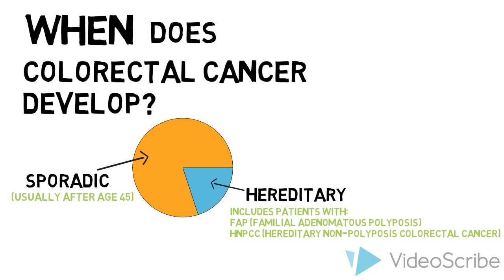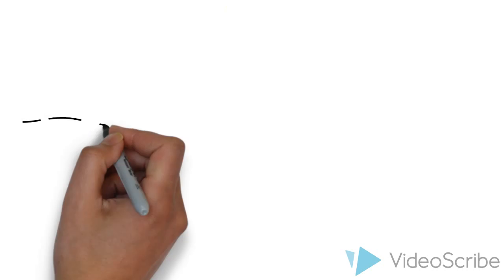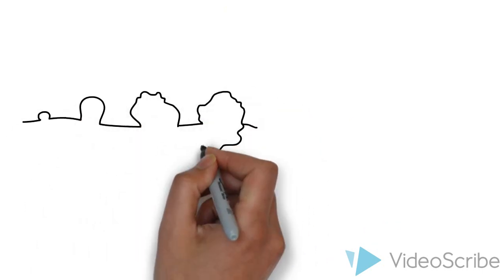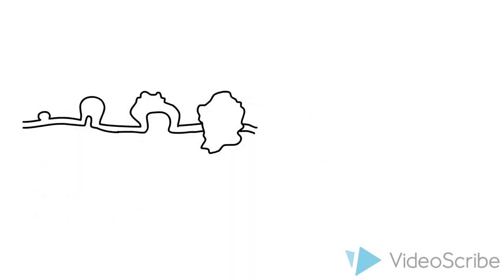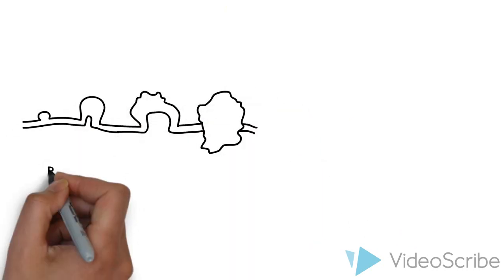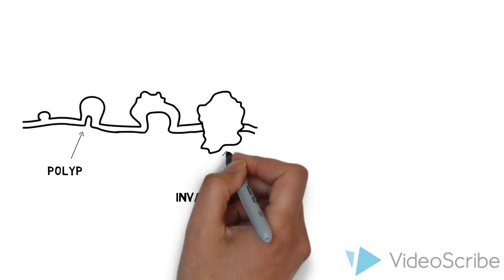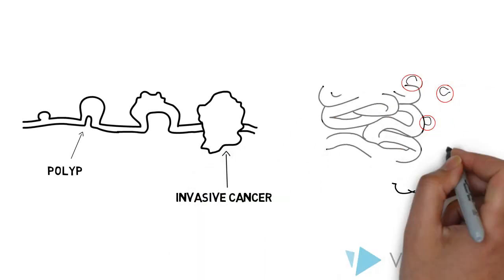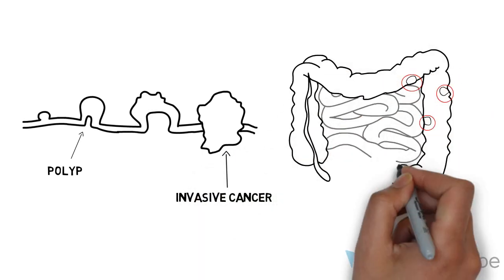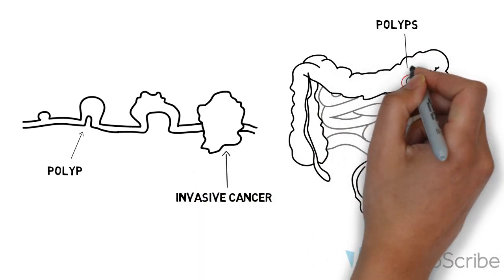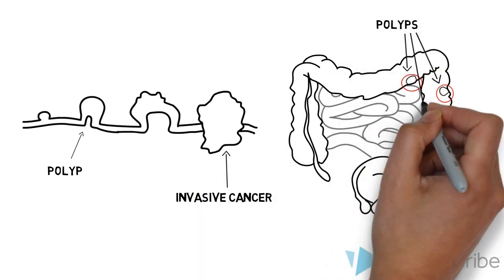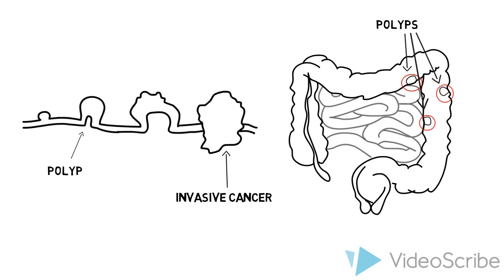Most colorectal cancers evolve from benign lesions called polyps. Most colorectal cancer cases can be prevented through regular screening and removal of these polyps. Screening guidelines vary according to regional protocols.